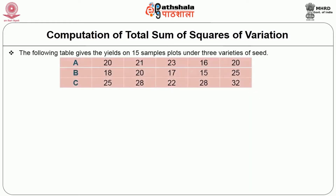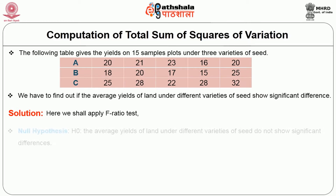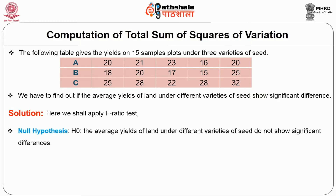Example: The following table gives the yields on 15 sample plots under three varieties of seeds. We have to find out if the average yields of land under different varieties of seeds show a significant difference. Solution: we shall apply the F-ratio test. Null hypothesis H₀: the average yields of land under different varieties of seeds do not show significant differences.